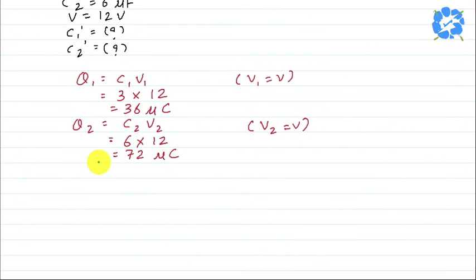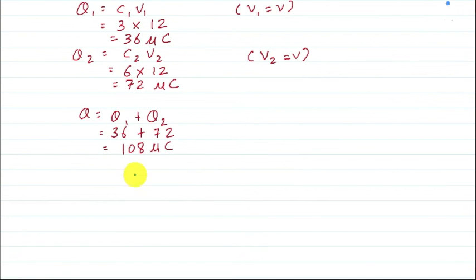Now total charge, find out. Total charge is Q1 plus Q2. So here Q1 is 36 microcoulomb plus Q2 is 72 microcoulomb, so total is 108 microcoulomb. Now because of series connection, charge will be conserved.